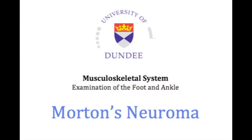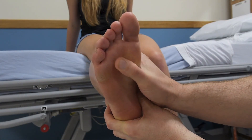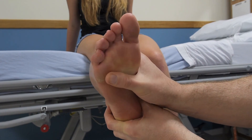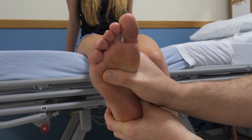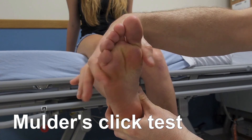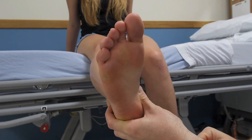In cases where you suspect a Morton's neuroma, palpate the web spaces and perform Mulder's click test. Grasping either side of the forefoot, squeeze the foot to compress its width. In a positive test, a palpable click is present, often associated with a shooting discomfort.